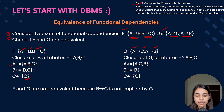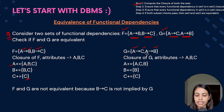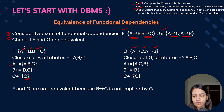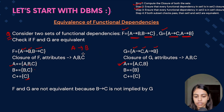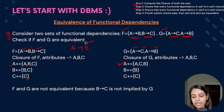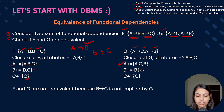Now computing closures for G. A+ in G: A determines C and A determines B, so A+ = {A, B, C}. B+ in G: there is no B as a determinant, so B+ = {B}. C+ in G: C determines only itself, so C+ = {C}. Now Step 2: check every FD in F against G's closures. For A→B: check A+ in G — we get B, so this holds. For B→C: check B+ in G — B+ = {B}, which does not contain C, so this dependency does not hold.